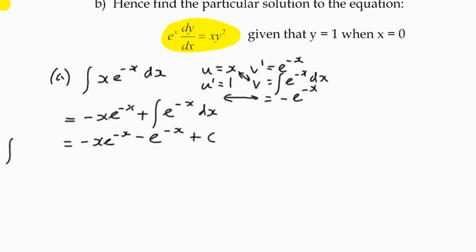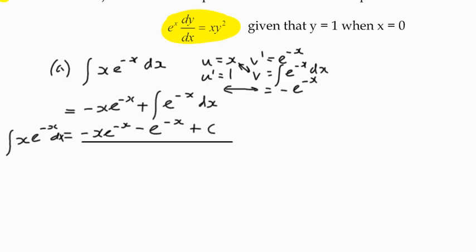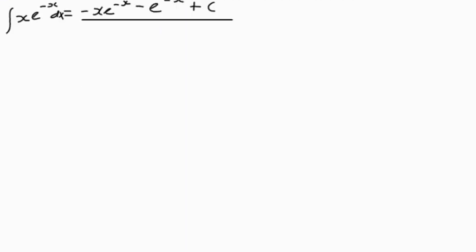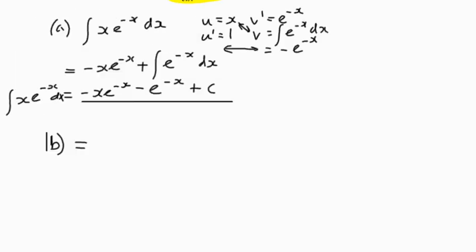So in other words, any time we see the integral of x times e to the negative x dx, we can say, ah, we know what we can use as a substitution. So that's because we're going to find that appearing in the second part.